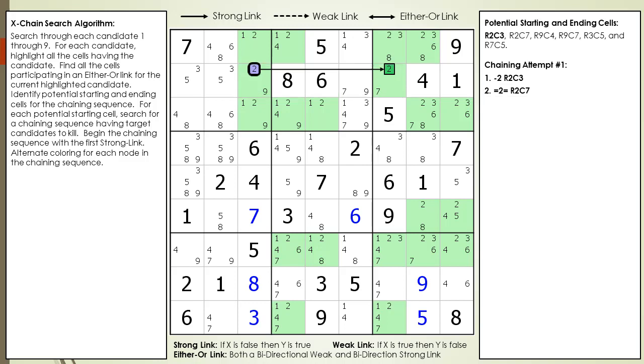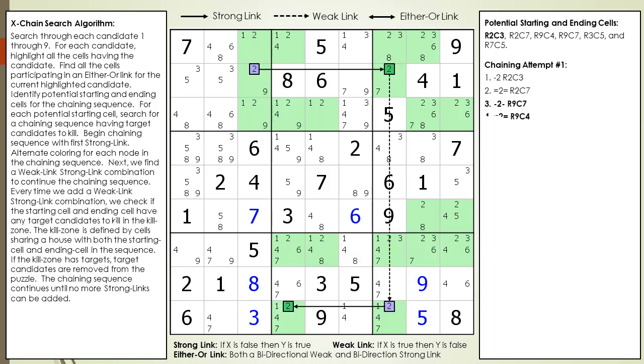Notice how the candidates within each cell use an alternating color sequence of purple and green. After adding the first strong link from the last cell in the chaining sequence, we try every weak link-strong link path looking for a sequence that results in target candidates being killed.